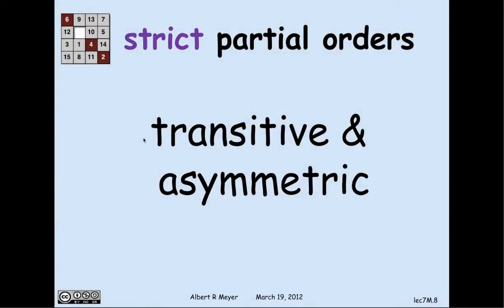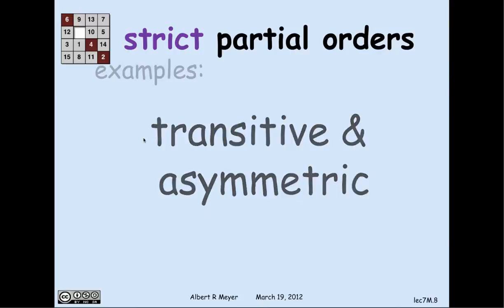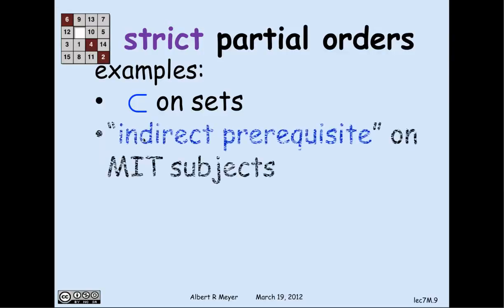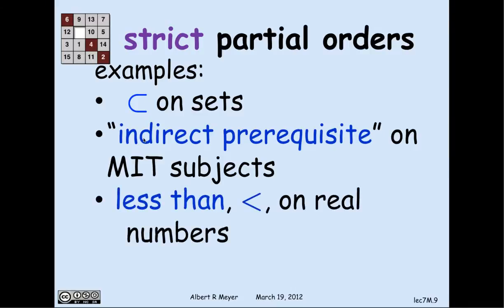A strict partial order is simply a relation that has these two properties of being transitive and asymmetric. Examples of strict partial orders include the proper containment relation on sets — which satisfies transitivity and the fact that if one set is properly contained in another, the second can't be properly contained in the first. The indirect prerequisite relation on MIT subjects is another example: if I'm a prerequisite of you, you can't be a prerequisite of me. And finally, the less-than relation on real numbers.